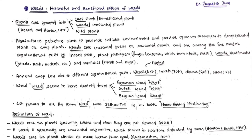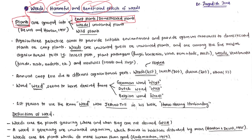Hello students, welcome back to our channel. Today we are going to talk about weeds, its harmful effects and beneficial effects. Whatever plants we observe in day-to-day life in our surroundings are classified into different categories. Some plants we are domesticating to get economic benefits — those are called crop plants. Some plants are unwanted, uninvited guests in our crop field — those are known as weeds.